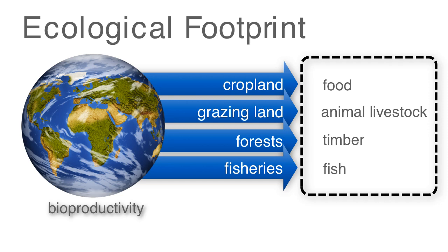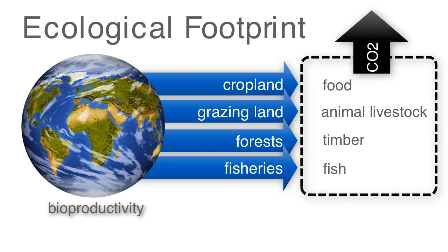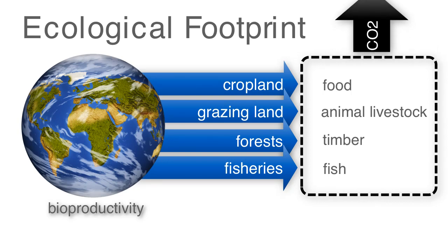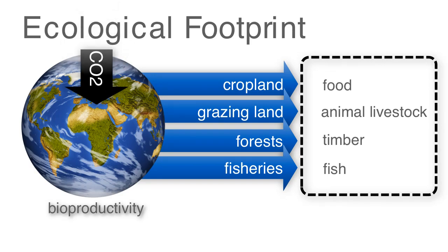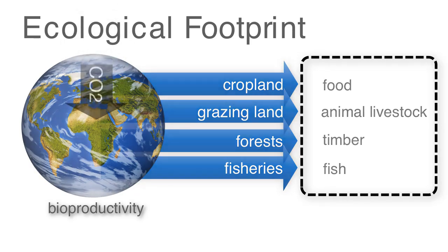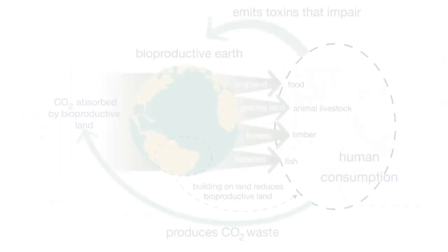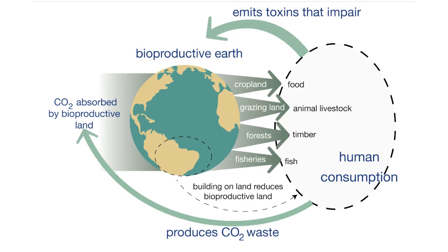These products are annually consumed. The act of consuming these products results in carbon dioxide, which is the primary waste accounted for in the ecological footprint. That carbon dioxide as waste is resorbed by the earth's systems. Here's another look at the cycle that contributes to the ecological footprint computation.